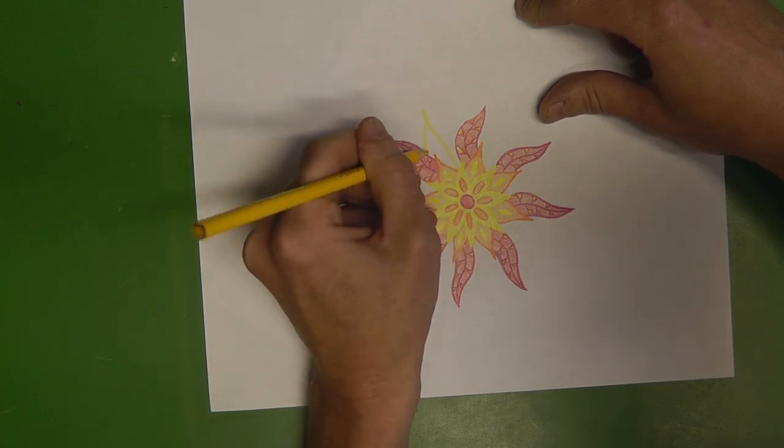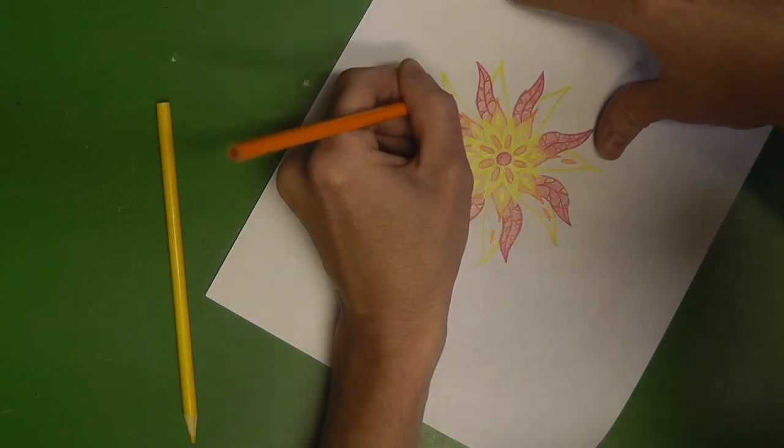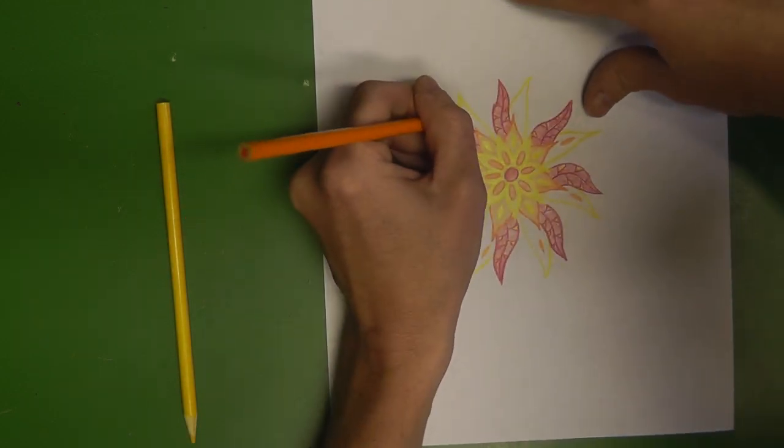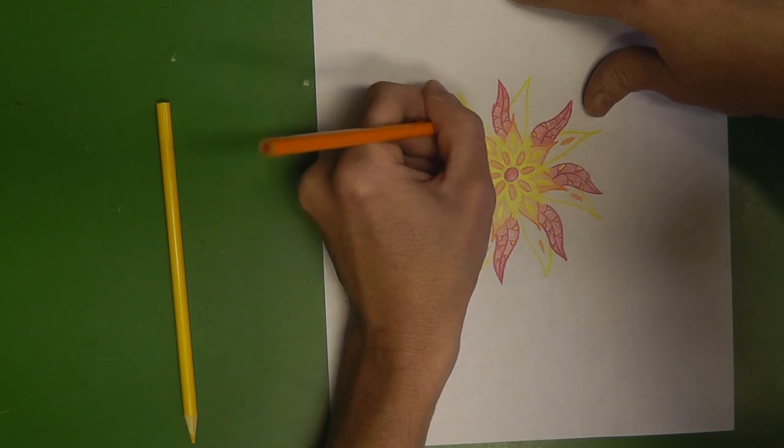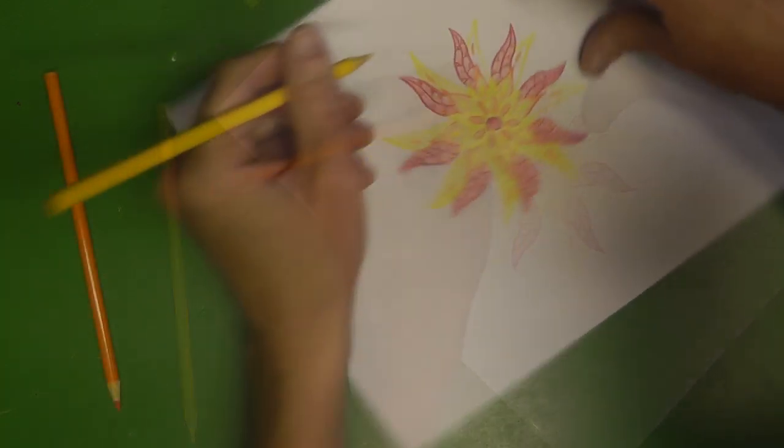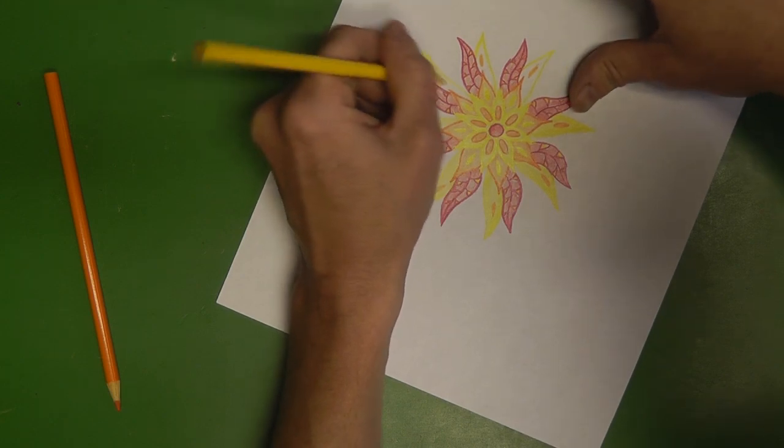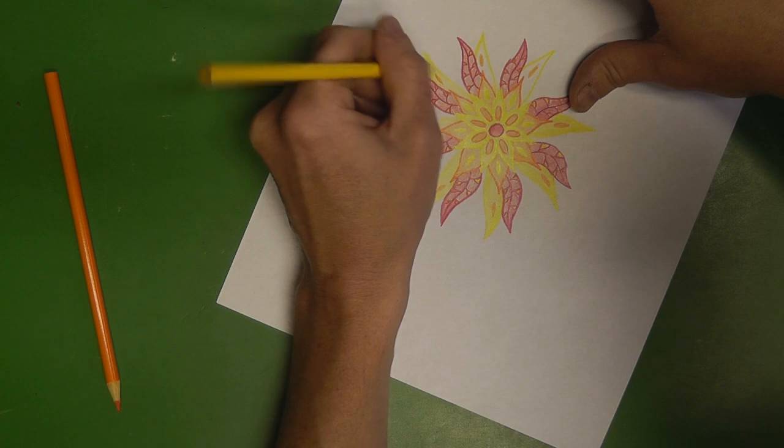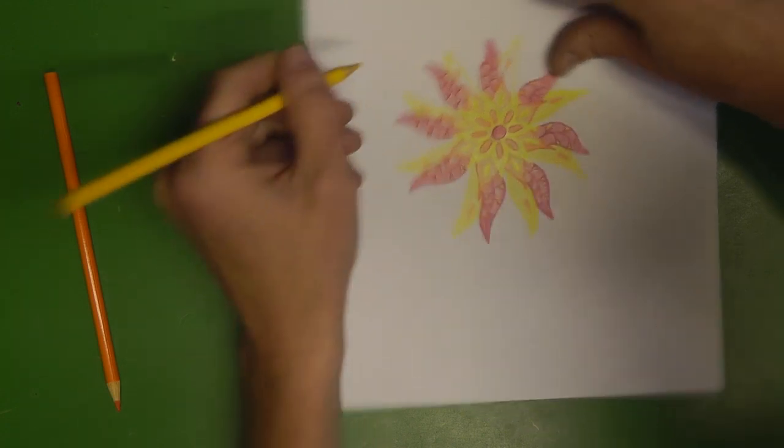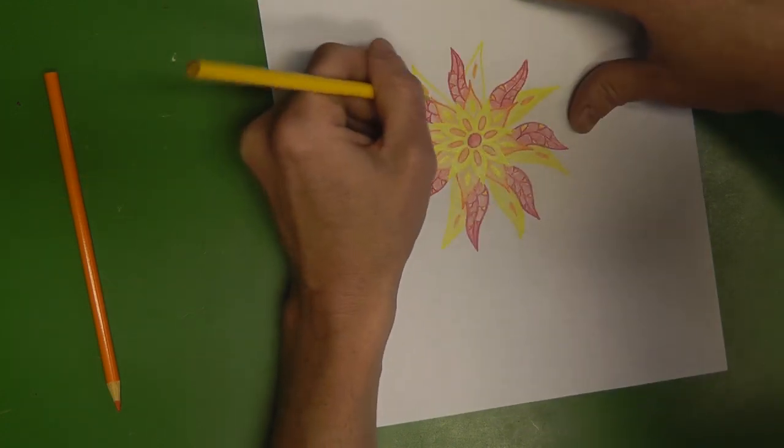And once again, just randomly going off in another direction, feeling inspired, and just creating yellow leaves, or petals, next to the red ones I just created. Now I'm filling those in, and I've also added some orange little designs to the leaves.